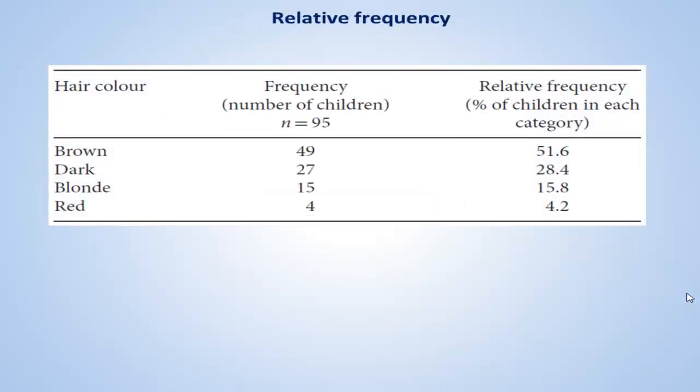Often more useful than the actual number of individuals in each category are percentages. Tables with this information are called relative or percentage frequency table.